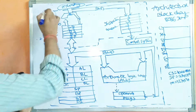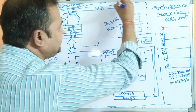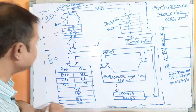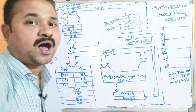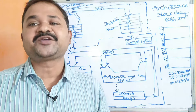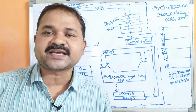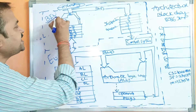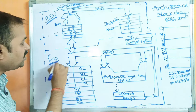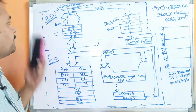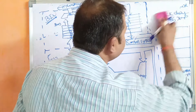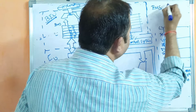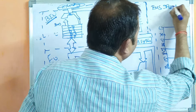Now let us see this diagram. This entire diagram within the dashes is called the architecture of the 8086 microprocessor. This architecture is mainly divided into two parts. The first part is called BIU — Bus Interface Unit. The second part is called EU — Execution Unit.